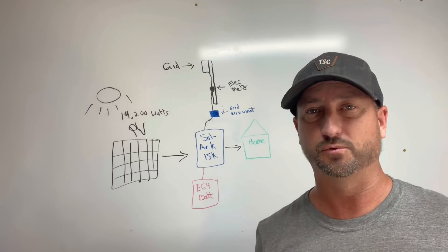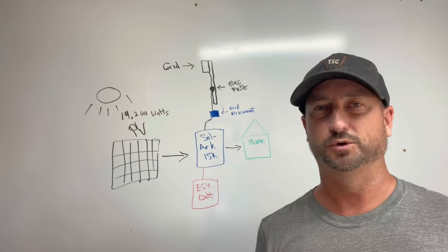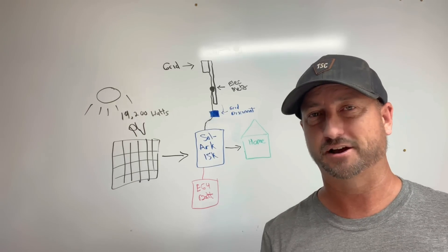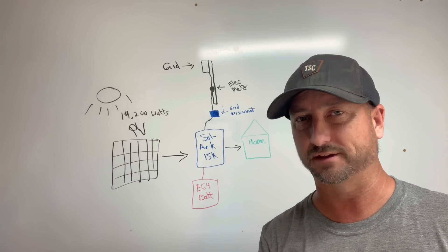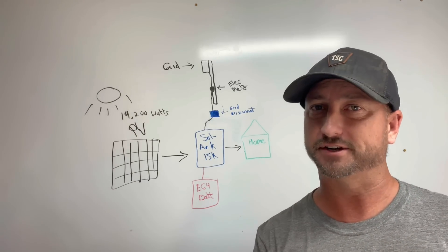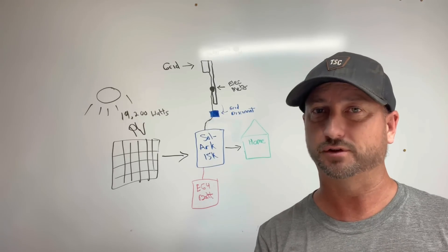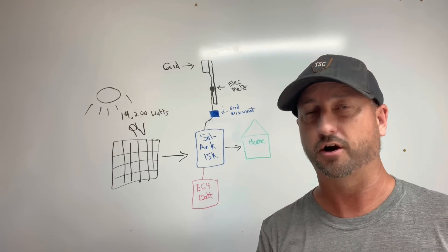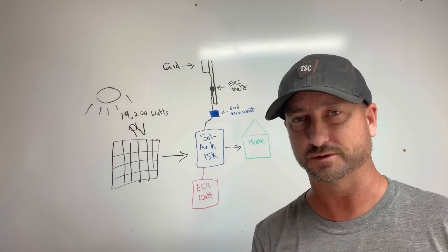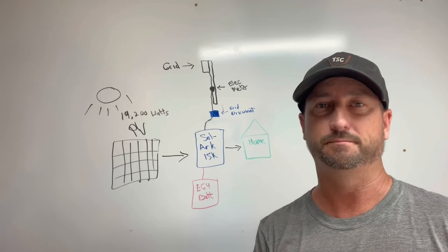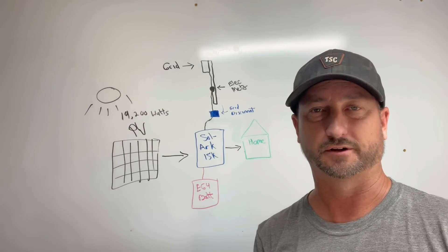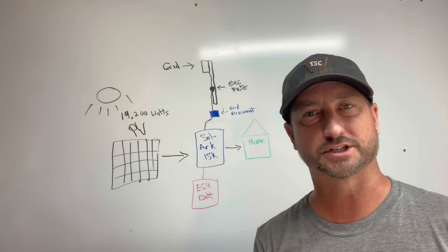So if closed loop communication is important to you for your batteries, then you're going to want to go with the EG4 18k PV, at least if you're going with EG4's batteries, which I love their batteries based on price and performance. I don't believe they can be beat. Now there are other batteries that work with Solark that they do have closed loop communication with, but they are a lot more expensive than EG4's batteries. For me that wouldn't be worth it. For you it may be if you really want to stick with Solark.